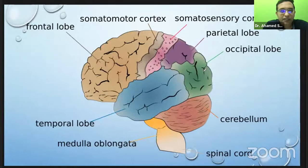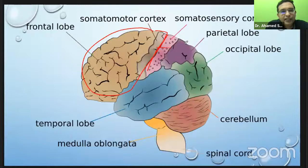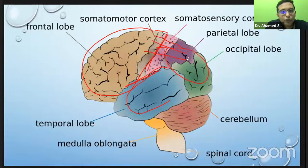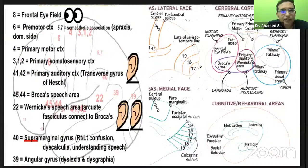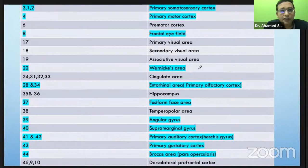The frontal lobe is anterior to the central sulcus; parietal is posterior; the temporal lobe is below the Sylvian sulcus, concerned mainly with memory; the parietal lobe is associated with visuospatial function; and occipital is concerned with vision. These are not clear-cut areas — they are actually interconnected, with intermixing of functions. I've put up the slide so you can revise these areas we studied during stroke, as these are repeat questions that come every time.